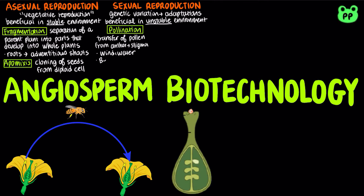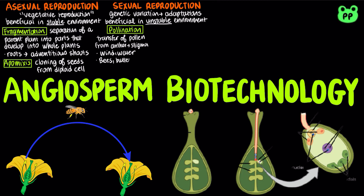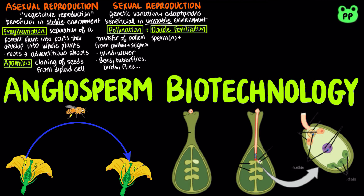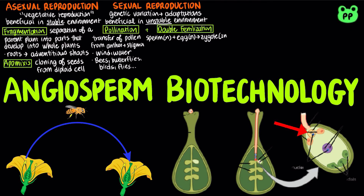After landing on a receptive stigma, a pollen grain produces a pollen tube that extends between the cells of the style toward the ovary. Double fertilization results from the discharge of two sperm from the pollen tube into the embryo sac in the ovary. One sperm combines with the egg to produce a zygote. The other sperm combines with two polar nuclei to form the triploid endosperm, which becomes the food source for the embryo.